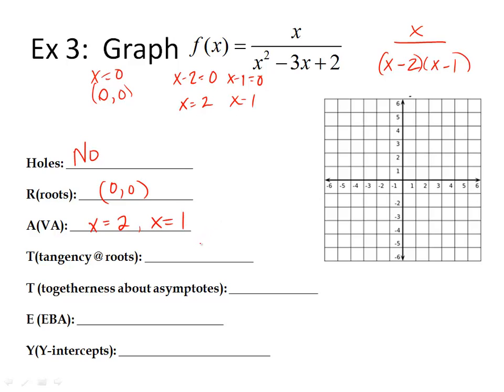Tangency. Do I have any factors in the top squared? No. It's not going to bounce anywhere. Any togetherness? Any factors in the bottom squared? No. We will see examples of this, but not right now. End behavior, BOBBYO BOTTNO EATSDC. Okay. Where's the bigger exponent? It's on the bottom. So that's a BOBBYO. So y equals zero. Y-intercept. Put in a zero for everywhere there's an x. So zero over zero minus zero plus two. So it's zero over two. So my y-intercept is (0, 0).